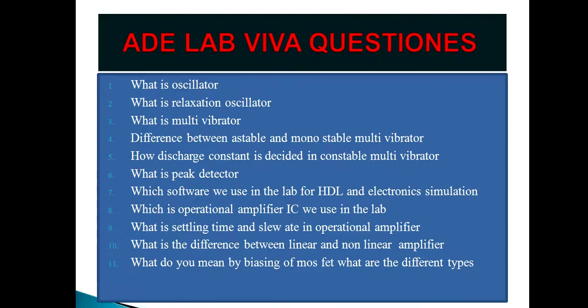A Schmitt trigger is an active circuit which converts an analog input signal into a digital output. That is a Schmitt trigger.